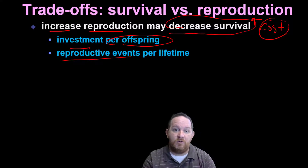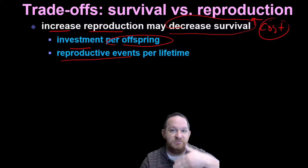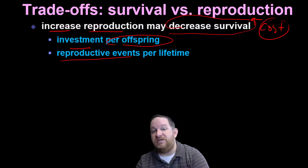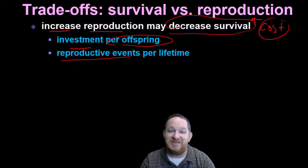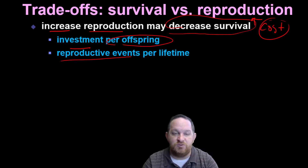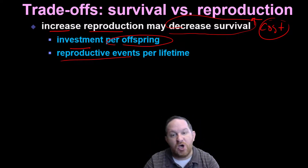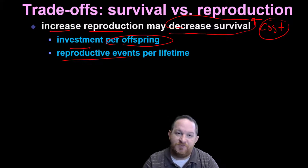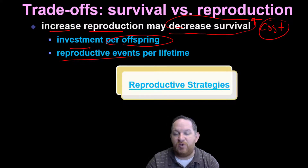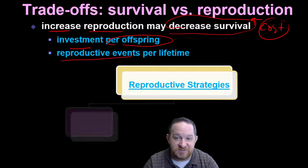Obviously, the more reproduction that occurs, you're going to have more organisms and more population. But the more you are reproducing, the lower the expectancy for survival of that individual.